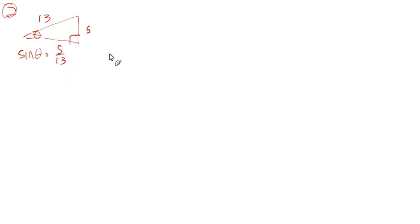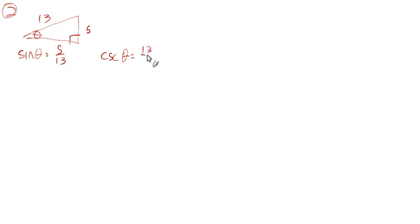We could also do the cosecant, because that's just the hypotenuse over the opposite, or the reciprocal of the sine — 13 over 5. But now, if you're going to try to do the cosine, you do the adjacent over the hypotenuse, but you don't have the adjacent side.